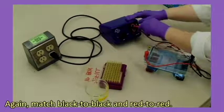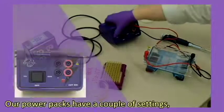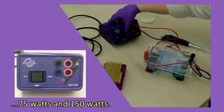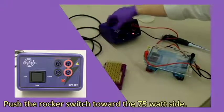Again, match black to black and red to red. Our power packs have a couple of settings, 75 watts and 150 watts. Push the rocker switch toward the 75 watt side. The light shows that it has power.